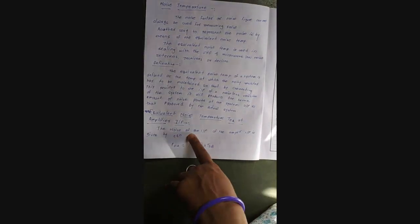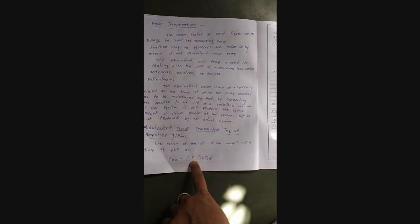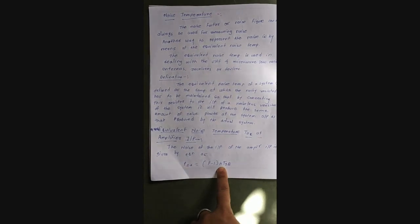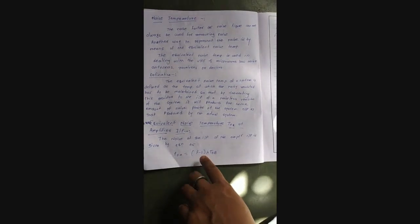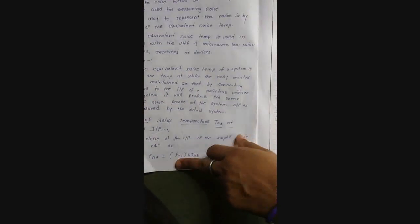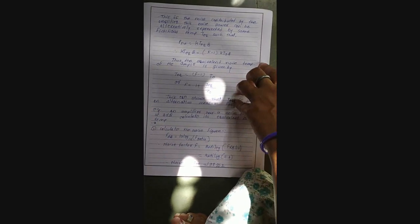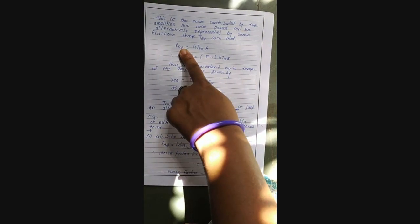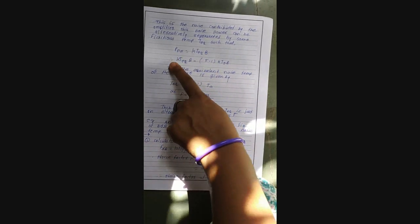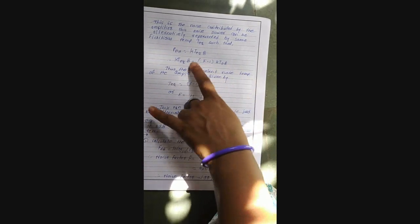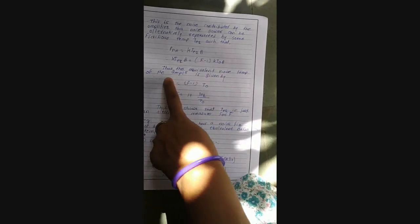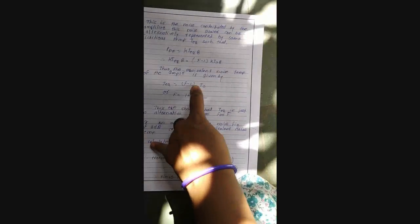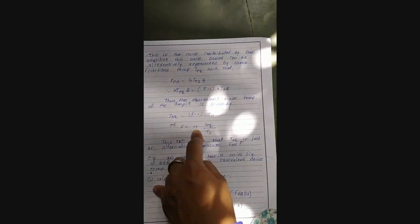The equivalent noise temperature T_eq is used at the amplifier input. The noise power at the amplifier input is given by: P_n = (F − 1) × k × T₀ × B, where k is Boltzmann's constant, T₀ is room temperature, and B is bandwidth. This noise power can alternatively be represented by an equivalent temperature T_eq such that: k × T_eq × B = (F − 1) × k × T₀ × B. Cancelling B from both sides gives: T_eq = (F − 1) × T₀, or equivalently, F = 1 + T_eq / T₀.